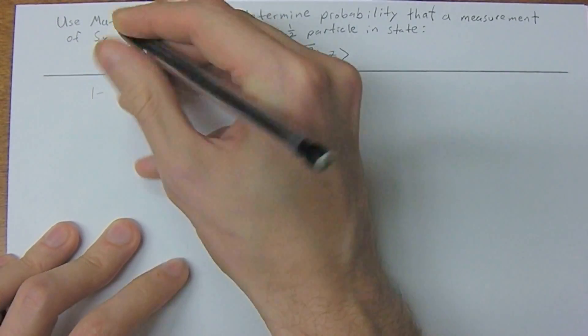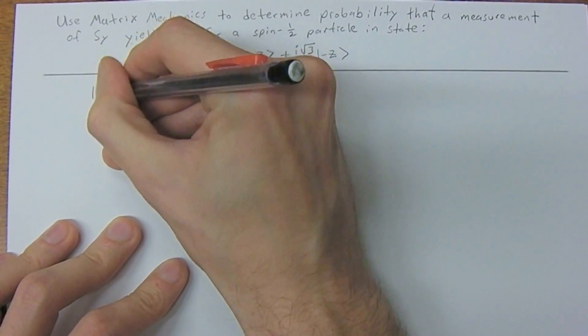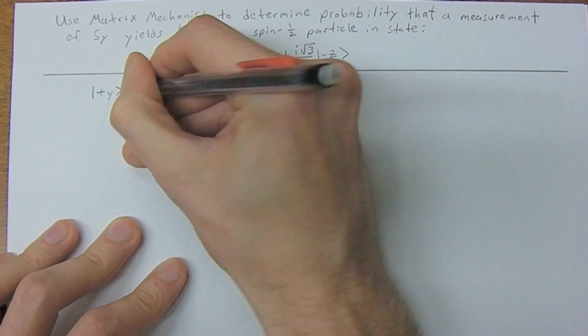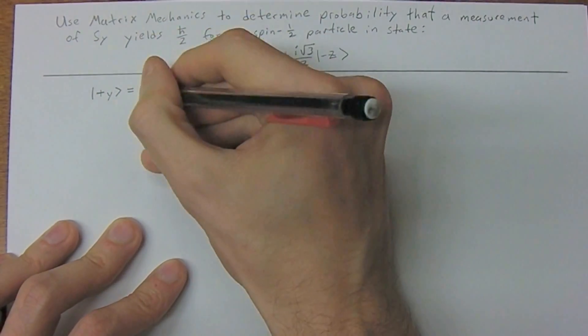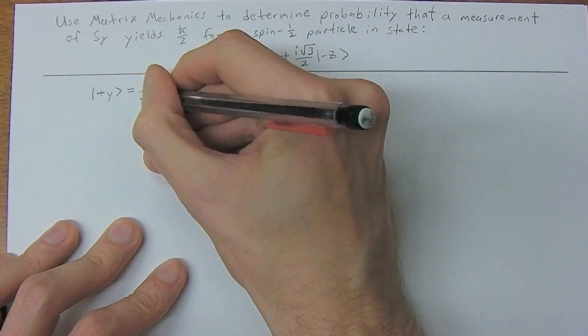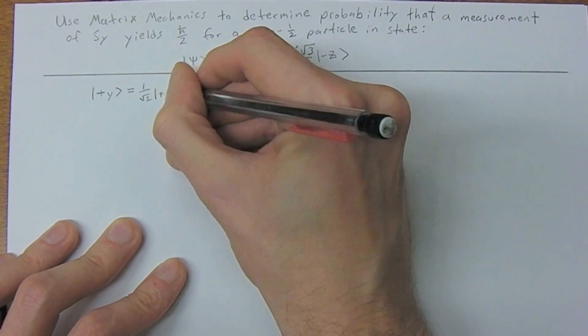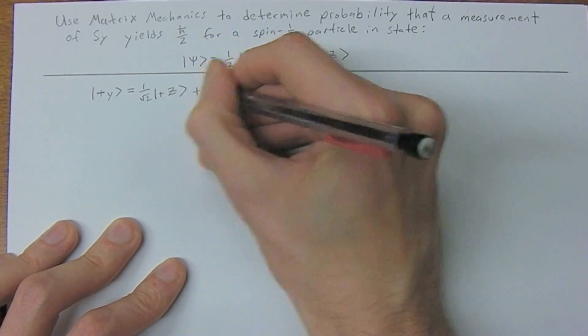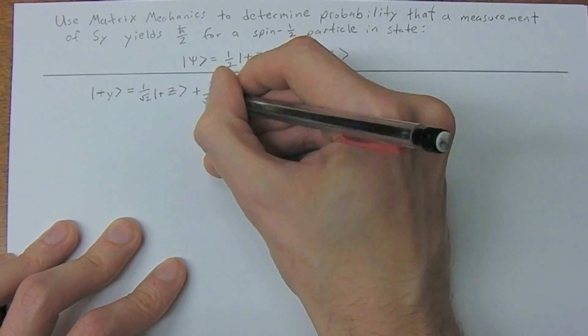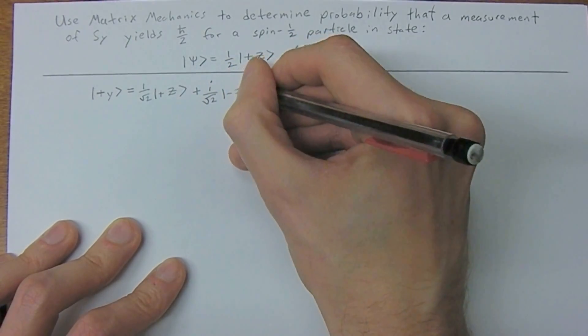So recall that if we want to express ket y in terms of the z basis states, ket y is 1 over square root of 2 ket plus z plus i over square root of 2 ket minus z.